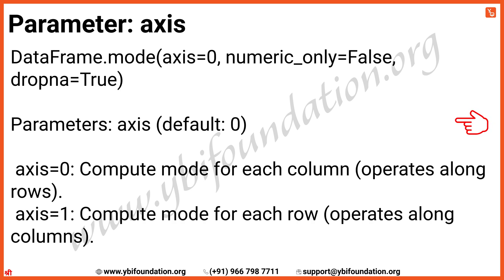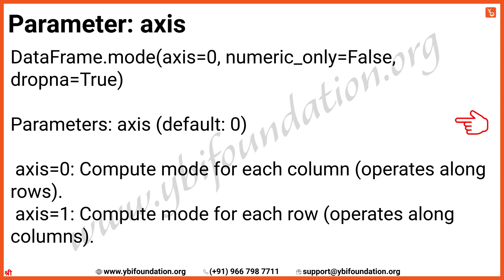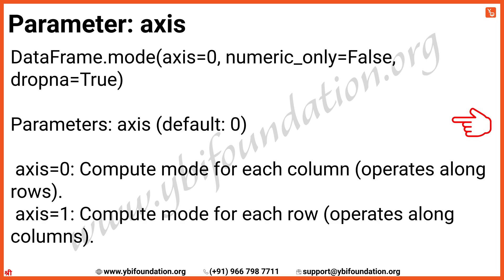Now let's understand its parameters. The first parameter, axis, determines whether you want to compute the mode along rows or columns. The default value is axis=0, which means it will calculate the mode for each column. If you set it to axis=1, the mode will be computed for each row.